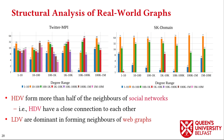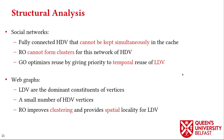In web graphs such as SCAD domain, it is the low-degree vertices that are dominant in forming the neighborhood of vertices. For social networks, we have fully connected high-degree vertices that cannot be kept in the cache, and GOrder provides better locality by giving priority to temporal reuse of low-degree vertices. On the other hand, low-degree vertices are the dominant constituents in web graphs, and Rabbit Order provides better locality by improving AID and increasing clustering for low-degree vertices.